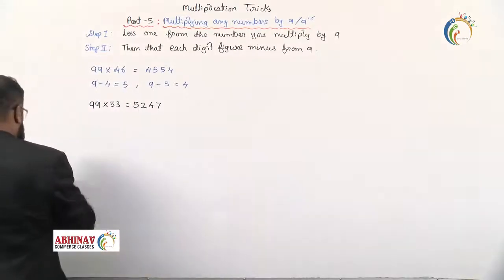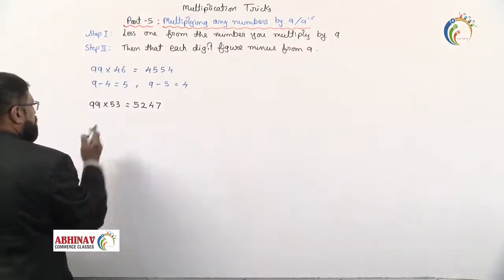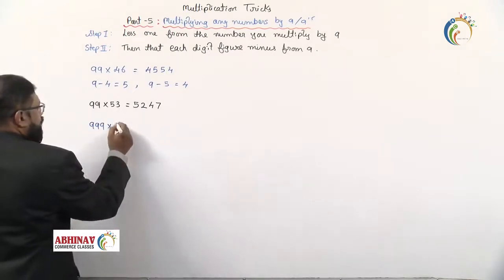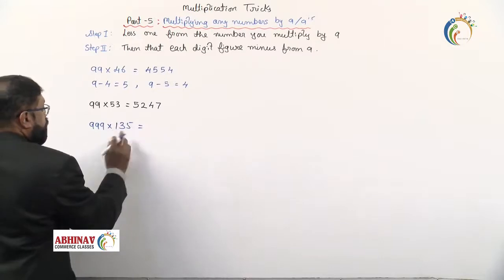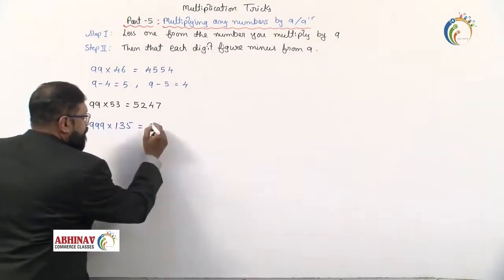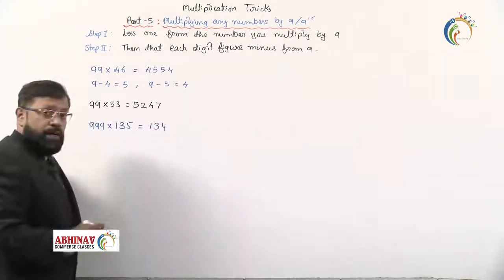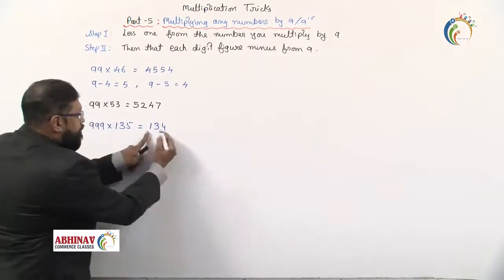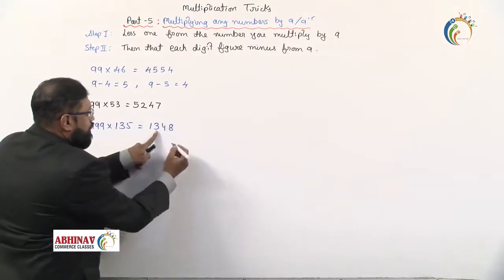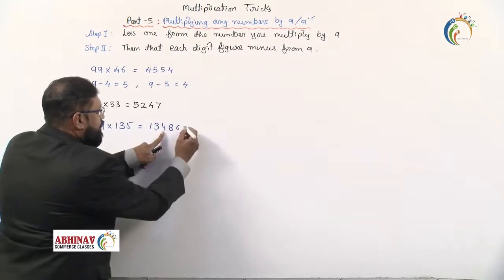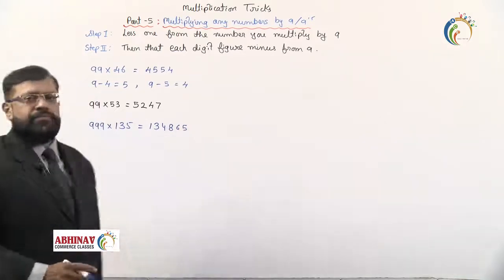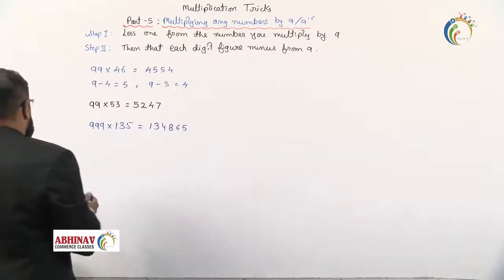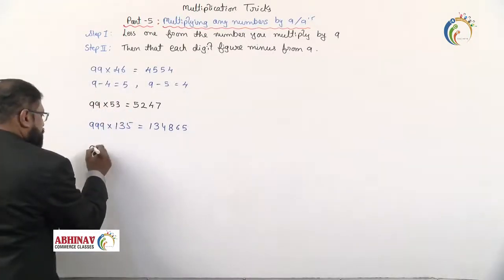Now let's increase to 999. We'll multiply 999 × 135. The number we are multiplying is 135. Subtract 1 to get 134. Now subtract each digit from 9: 9 minus 1 is 8, 9 minus 3 is 6, 9 minus 4 is 5. The answer is 134,865.